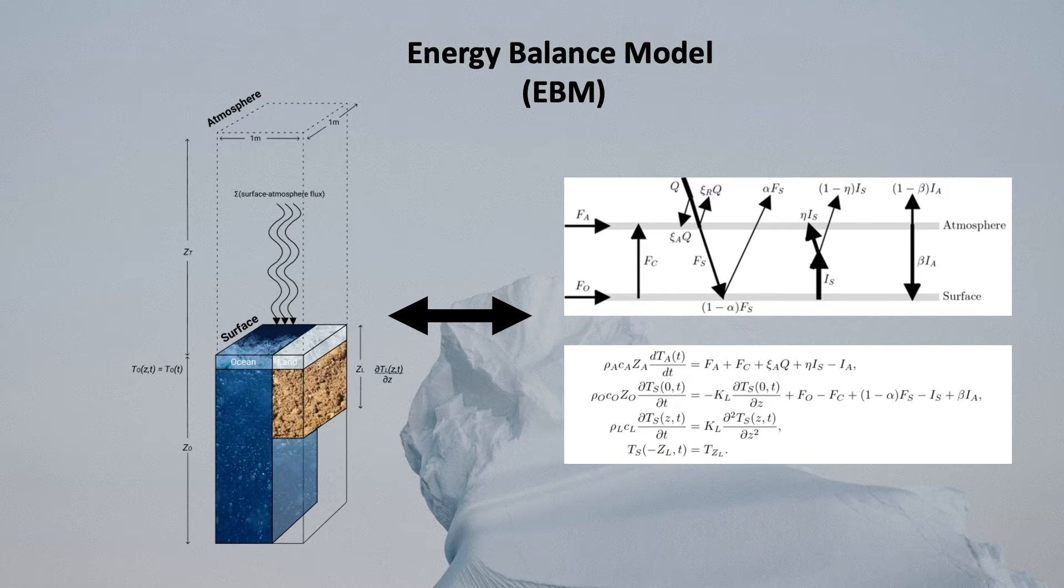The EBM simply consists of a surface slab which is partitioned into sea and land and an atmosphere slab. By prescribing the model with forcing parameters, like carbon dioxide levels, and modeling the energy balance of the system, you are able to understand how this climate model will evolve.